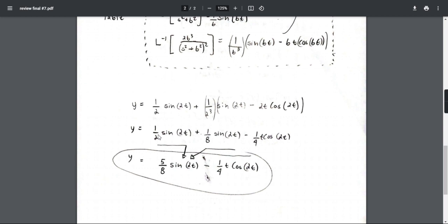All I did over here, in order for it to combine like terms, I multiply this by 4, making this 4 over 8. So 4 over 8 plus 1 over 8 is going to be 5 over 8. And then over here, we leave this alone, of course.